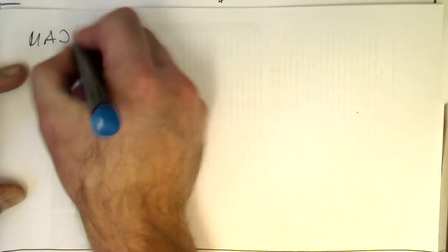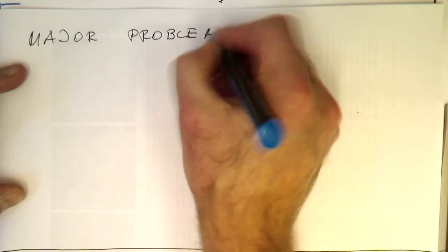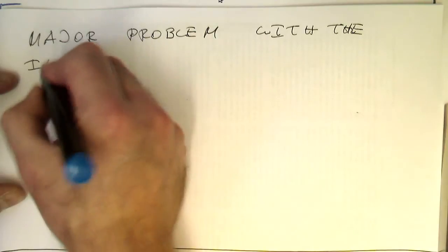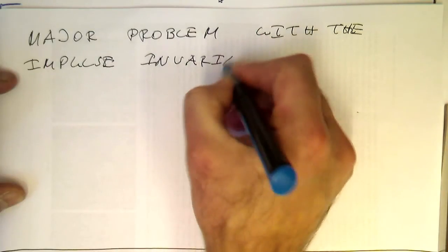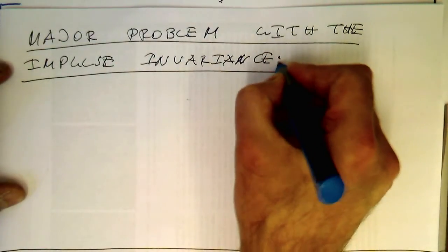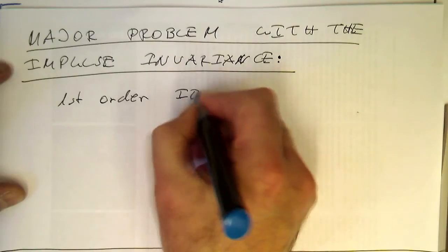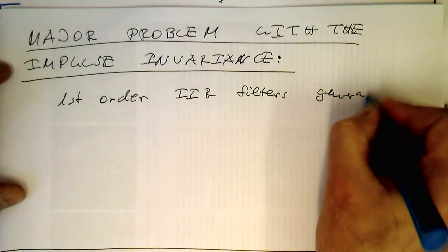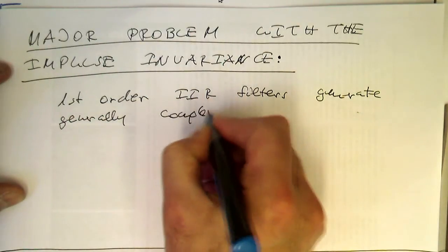So there's a major problem with the impulse invariance, and the problem is that these first order IIR filters generally generate complex outputs.